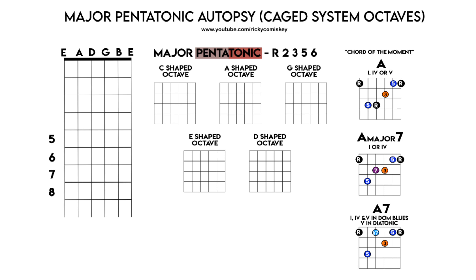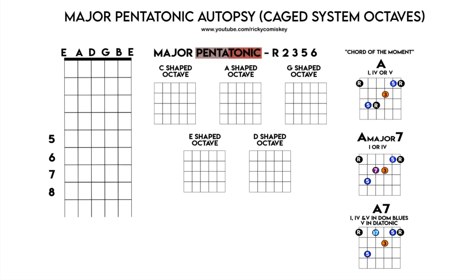Those are the chords that we can play this scale over - a chord-scale relationship we want to get to know. Now it is time to build the major pentatonic using the CAGED octaves. Because this is an E shaped scale - the root note falls on the E string - I'm going to apply the E shaped octaves to the E string. There's the E shaped octave and the distribution of the root notes. The role of the root note is to sound resolved, to take you back home. If you are improvising, creating a solo, this is where your phrases finish and want to resolve.